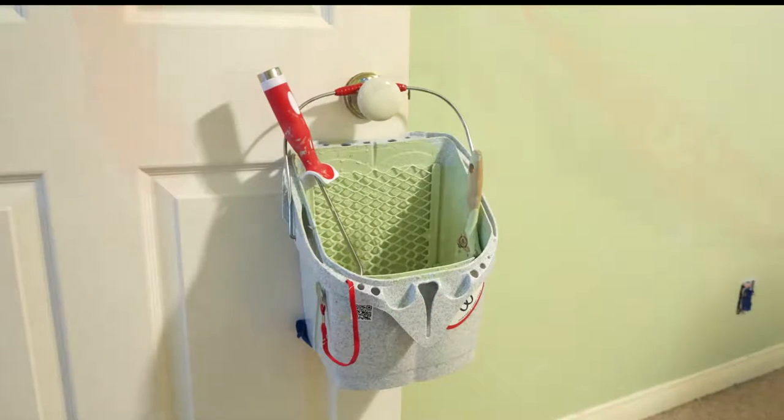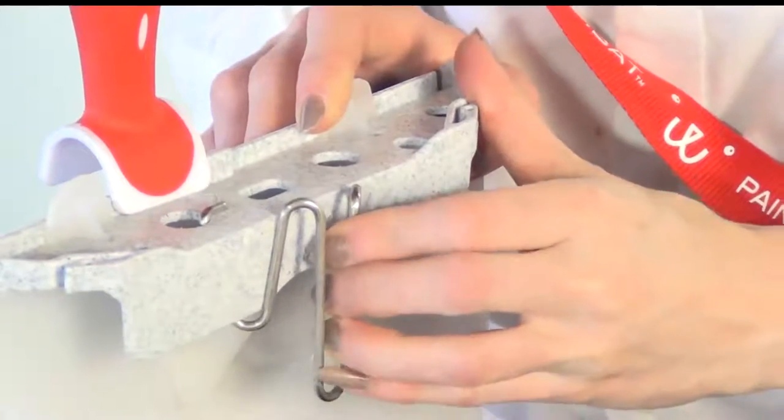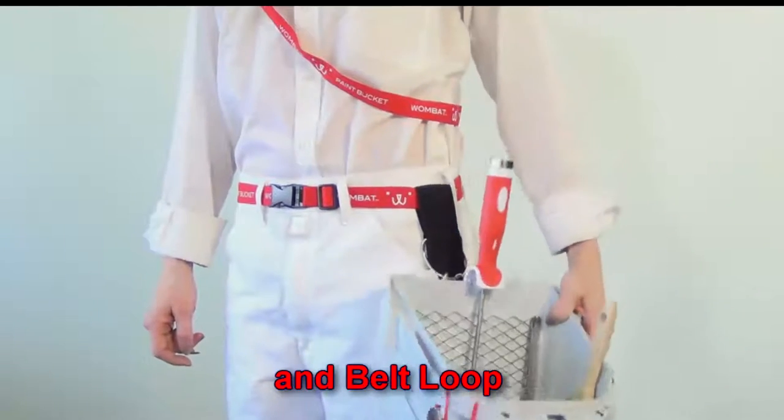The optional hip clip easily attaches to the back rim and slides into the rugged belt loop for another way to hang your Wombat Port-a-Paint securely at your waist.